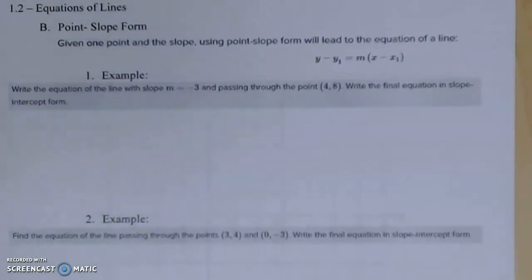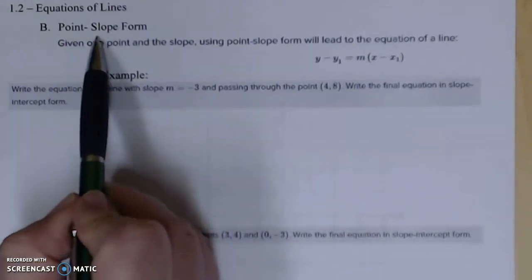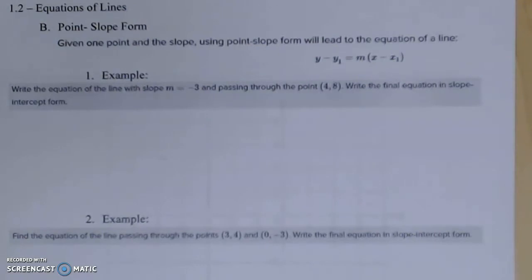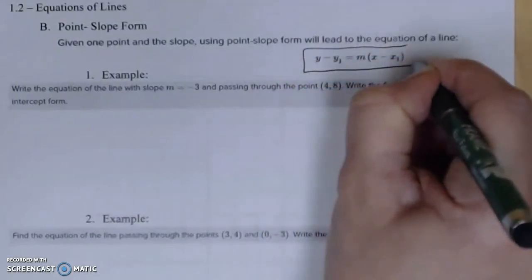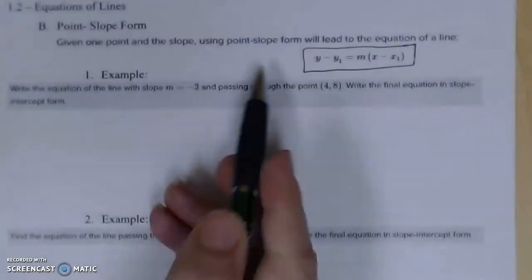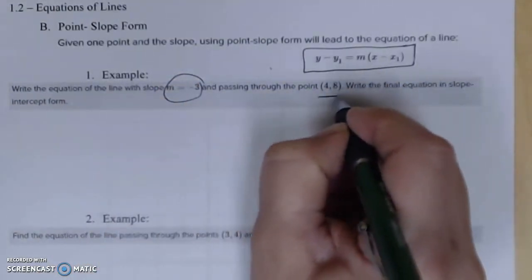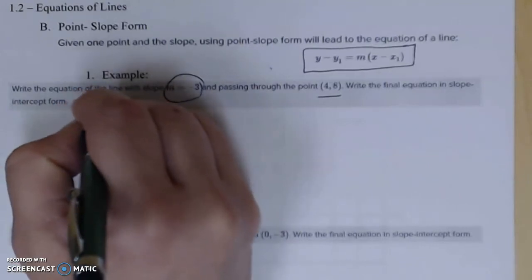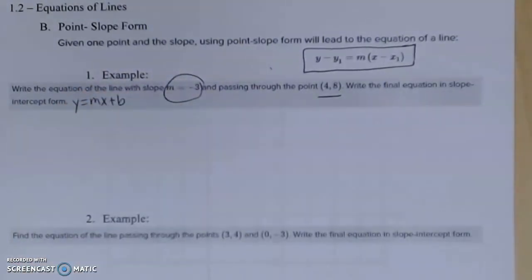The last one was slope-intercept and gave us the slope and intercept. This one says point-slope and gives us exactly that: a point and a slope. Given one point and the slope, using point-slope form will lead us to the equation of a line. Third important thing on your formula sheet: y minus y1 equals m times (x minus x1). This is important because you'll notice I don't have to have two points to figure this out. I only need one. Write the equation of a line given slope of -3, passing through point (4, 8), and write the final equation in slope-intercept form, meaning I want y completely by itself.